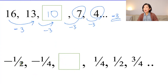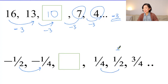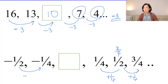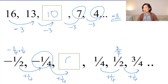Now we've got a fraction sequence. Fractions are numbers as well, so it's the same — let's find the common difference. It's better to use easier numbers: 1 quarter and 1 half is 2 quarters. Now 2 quarters take away 1 quarter gives you 1 quarter. So the numbers increase by 1 quarter, and the next value after minus 1 quarter is 0.